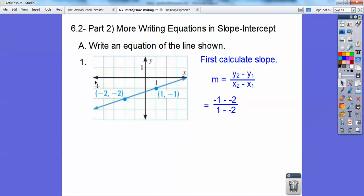This is my y2. This is my y1. So those go on top, and then this goes on the bottom, 1 minus negative 2. That minus negative 2 becomes plus 2 on both of those, and you get 1 third.